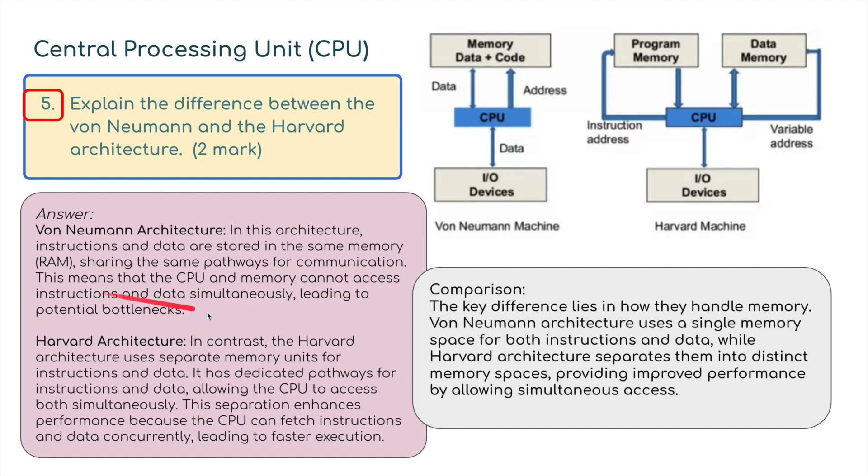This means that the CPU and memory cannot access instructions and data simultaneously, leading to potential bottlenecks. In contrast, the Harvard architecture uses separate memory units for instructions and data. It has dedicated pathways allowing the CPU to access both simultaneously. This separation enhances performance as the CPU can fetch instructions and data concurrently, leading to faster execution. The key difference lies in how they handle memory: von Neumann uses a single memory space while Harvard architecture separates them into distinct memory spaces.